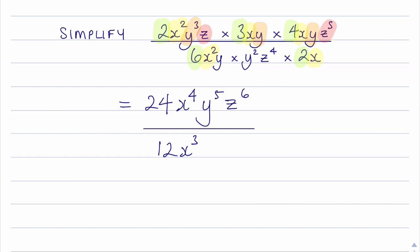Next I look at the y terms. I've got y and y squared. So that will give me y cubed. And finally the z terms. I've only got one of them here. That's z to the power of 4. So we have z to the power of 4.